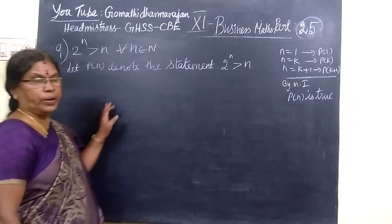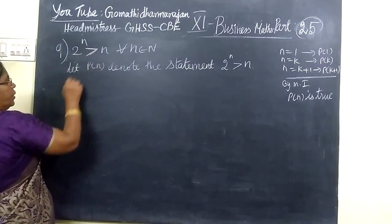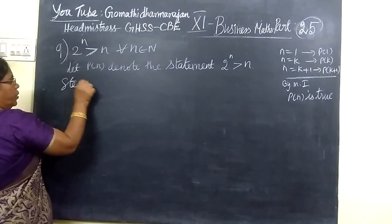Next, we will see path 25, and this is for down standard business math. Now, we will do step 1.